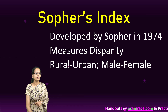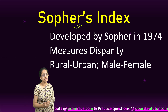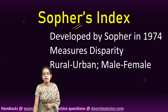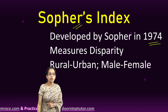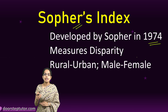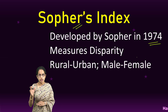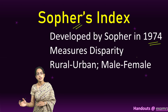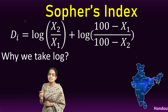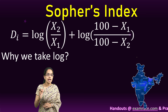Sofer was the first person who developed this index, which was known as Sofer's index to understand disparity. The idea was developed in 1974, and the disparities it primarily addressed were related to rural-urban disparity and male-female, or gender, disparities. Sofer propounded a simple way to understand this disparity.